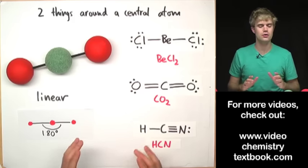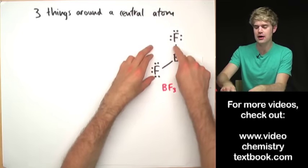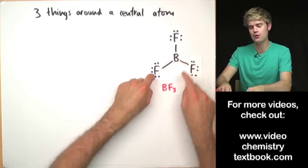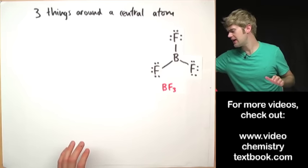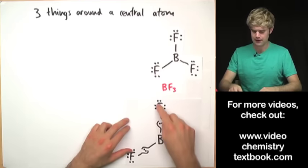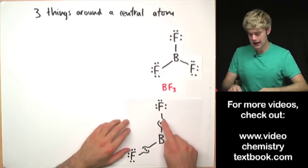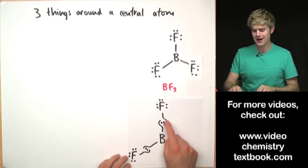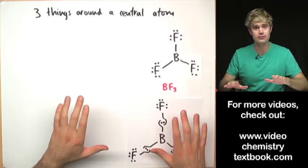Now let's look at some molecules where we have three things surrounding a central atom. In BF₃, the central atom is surrounded by three bonds to other atoms. Boron, like beryllium before, is an exception to the octet rule — when making three bonds, boron has six valence electrons and is totally happy with that. We can think about these bonds between boron and fluorine as hands sharing an electron pair, and the electron pairs in each bond push against each other and want to be far away. So when we have three things, how do we arrange these electron pairs so that they are as far away from each other as possible in 3D?